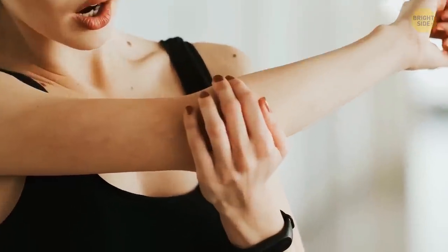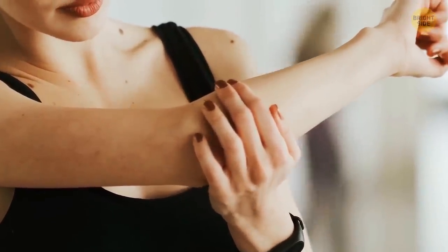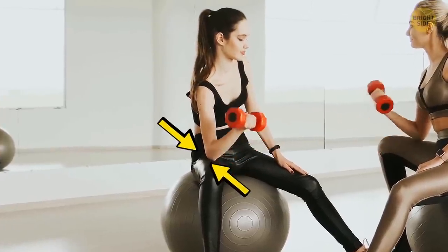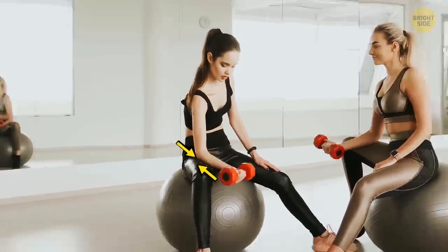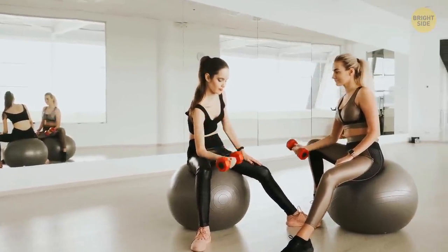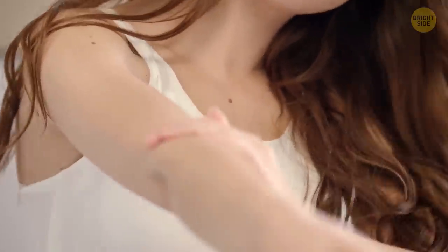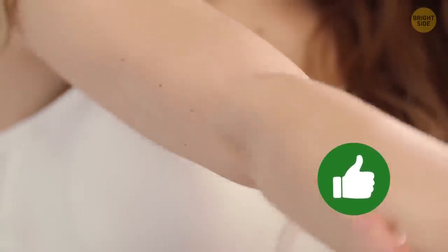You might notice that your elbows have gotten darker than the rest of your arms. It happens because the skin there is rather thin and elastic since you use those joints a lot. To even out your skin shade, take time to cleanse and moisturize your elbows separately from the rest of your skin.